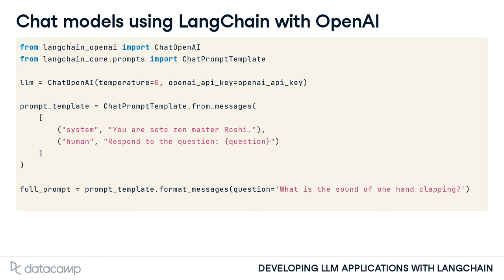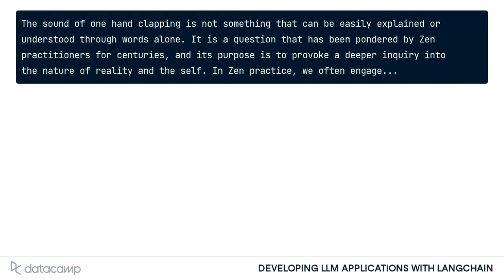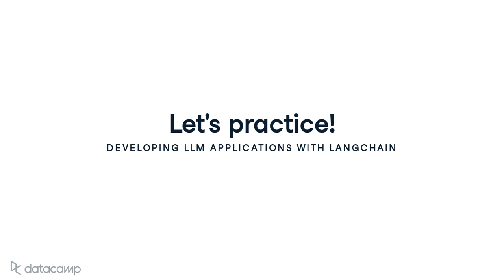We'll pass the prompt to the model to view the model response. The response from the model is pretty long, but adjusting our PromptTemplate to indicate a shorter length would quickly fix this. Let's practice these prompting strategies to optimize the response from ChatPromptTemplate.